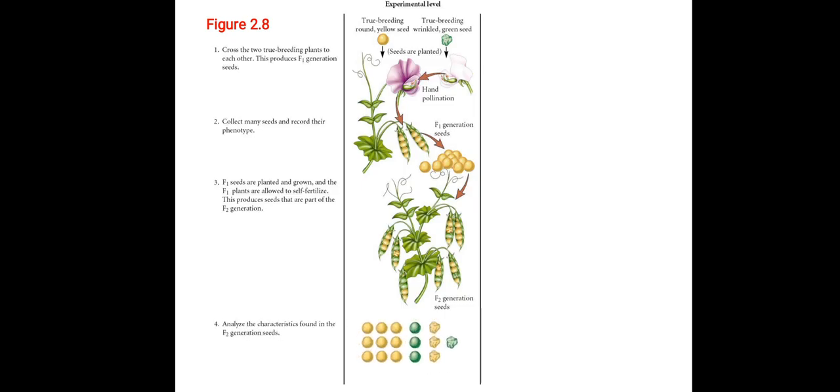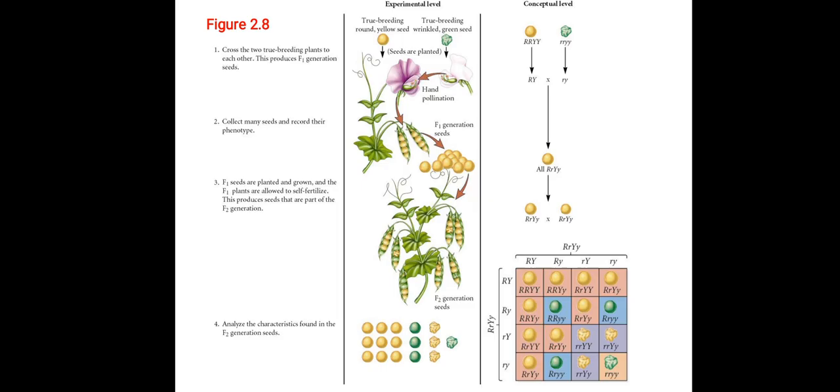Now, we shall analyze these characteristics that were found in the F2 generation with the conceptual method. Here the round and yellow seeds are crossed with wrinkled and green seeds giving rise to all round and yellow seeds, however being hybrids. Then in the F2 generation, you can see here in the diagrams, new recombinations have been formed.